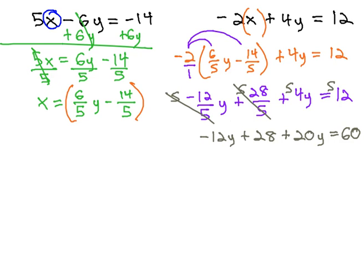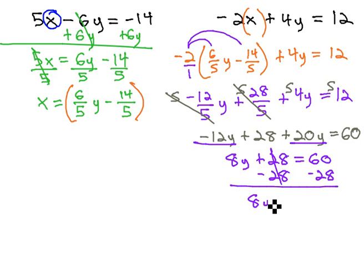Now, we can continue solving the fractions that are out of there. Negative 12 and 20 is 8y plus 28 equals 60. Subtract 28 from both sides, and 8y equals 32. Divide both sides by 8, and this one's nice enough that it did come out to a nice whole number of 4.